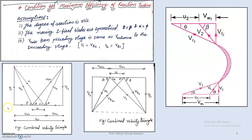For the outlet velocity triangle, from vr2 to v2 is the blade velocity u. The angle phi is made by v2, which makes angle beta, and vf2 is opposite to v2. Similarly, you can draw these triangles upside down.